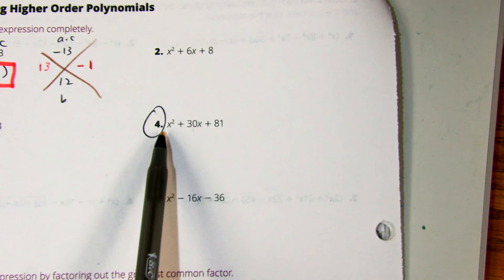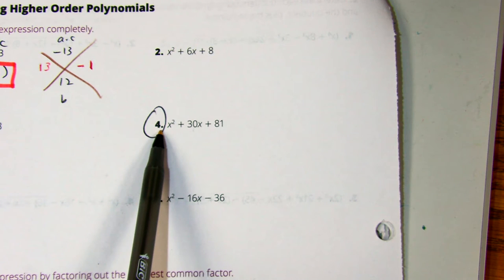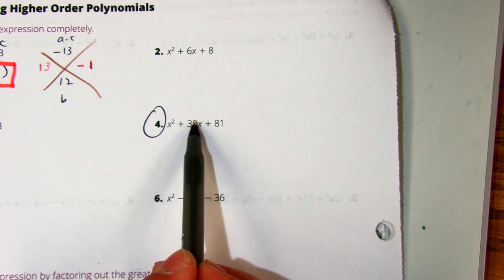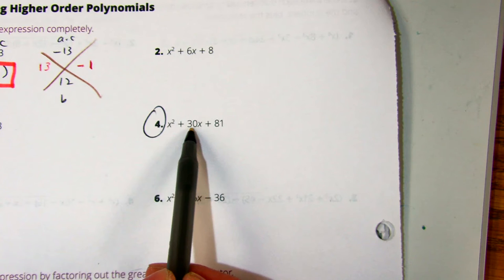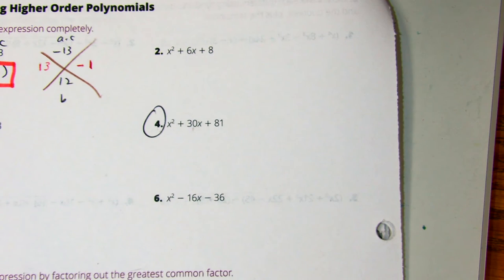Class, show me your thumbs. Is there a greatest common factor? There's not. This one has an x, x, no x. Odd number, even, odd. Okay, so no GCF.